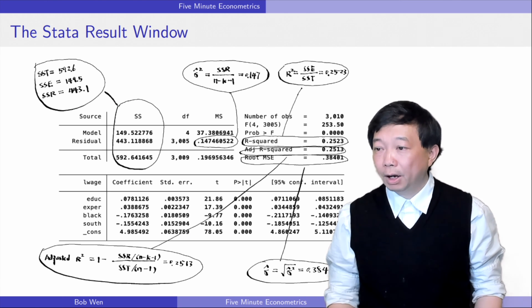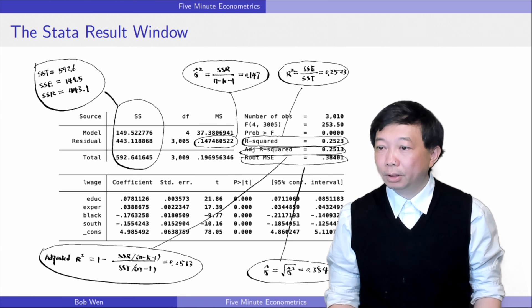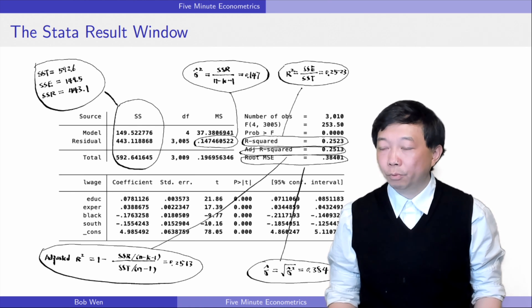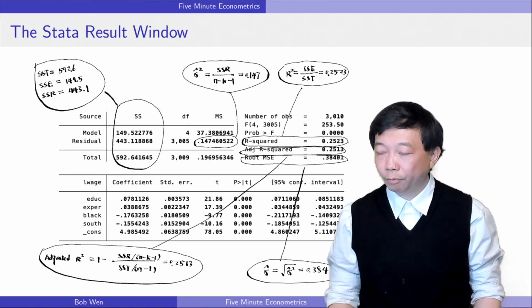Next, let's find the three variation measures in the STATA regression result window. Here is the result window after we run an OLS regression. We may be familiar with the lower part of the window. They are the OLS estimates.